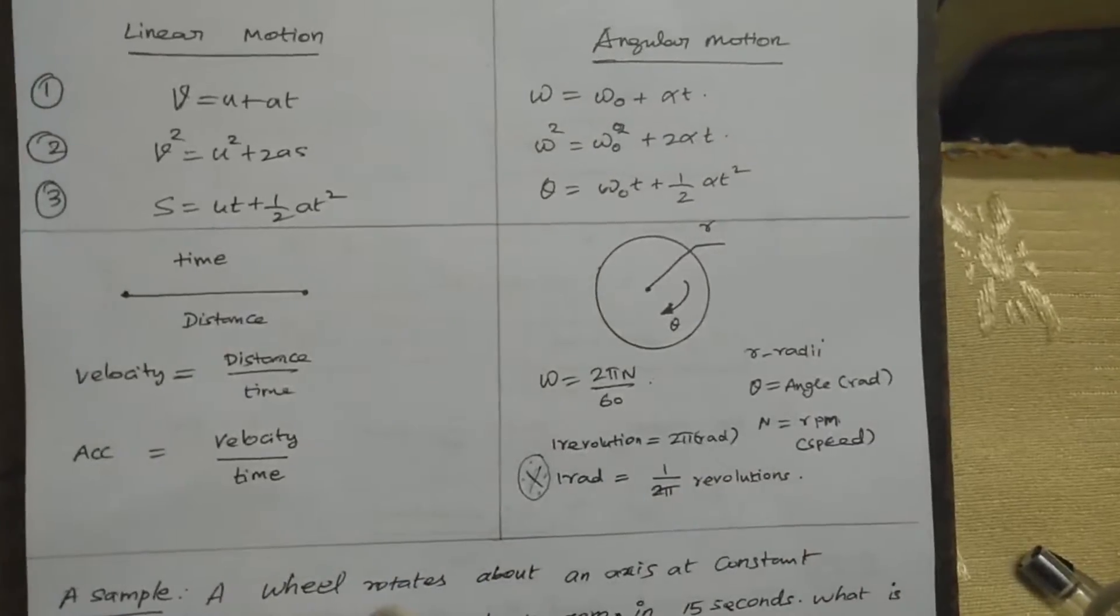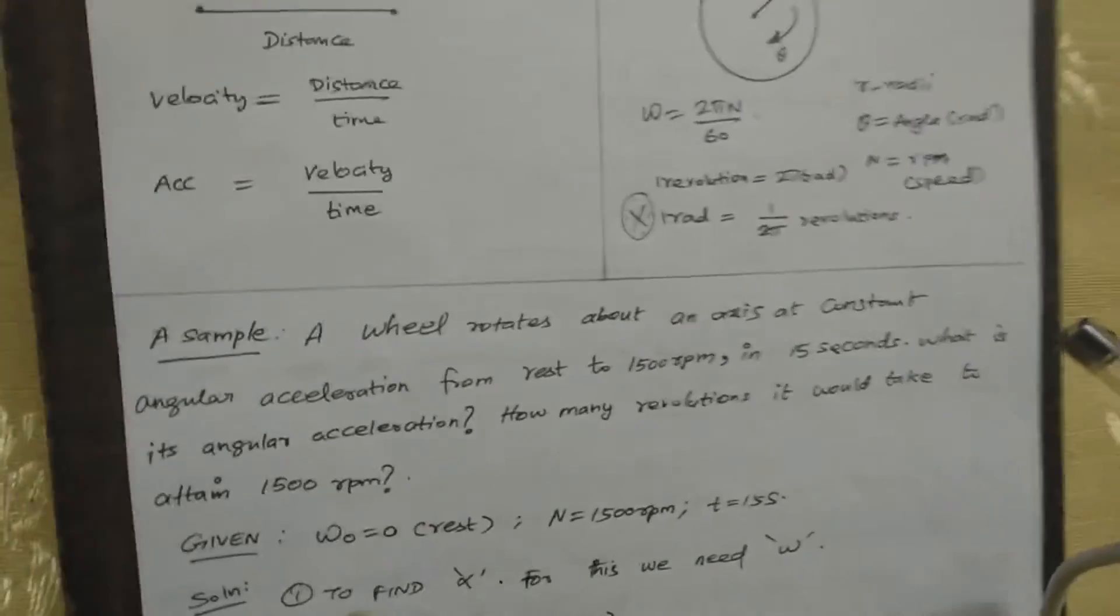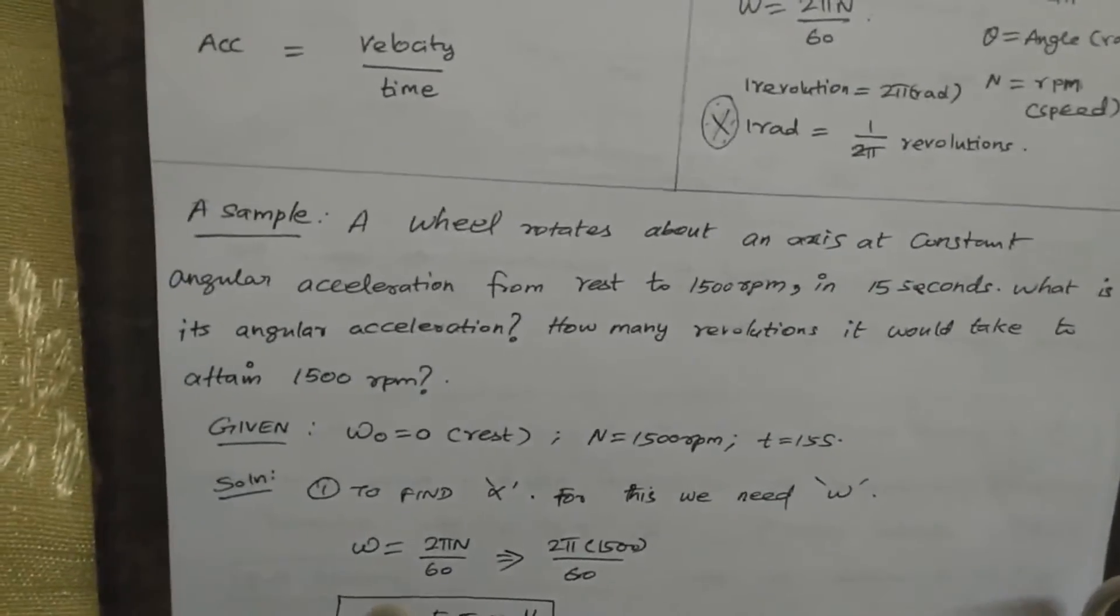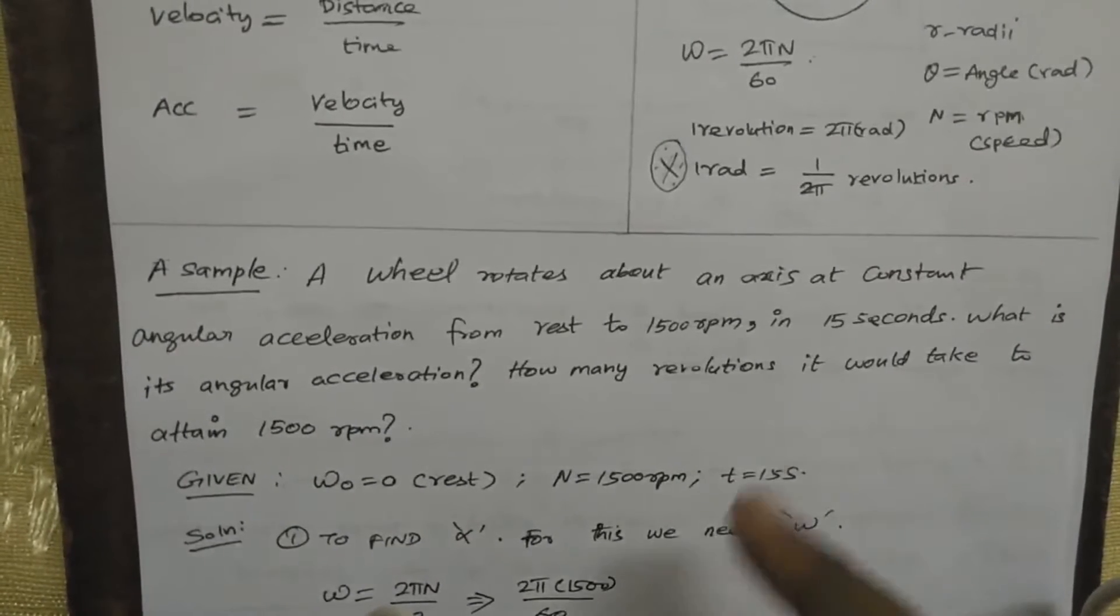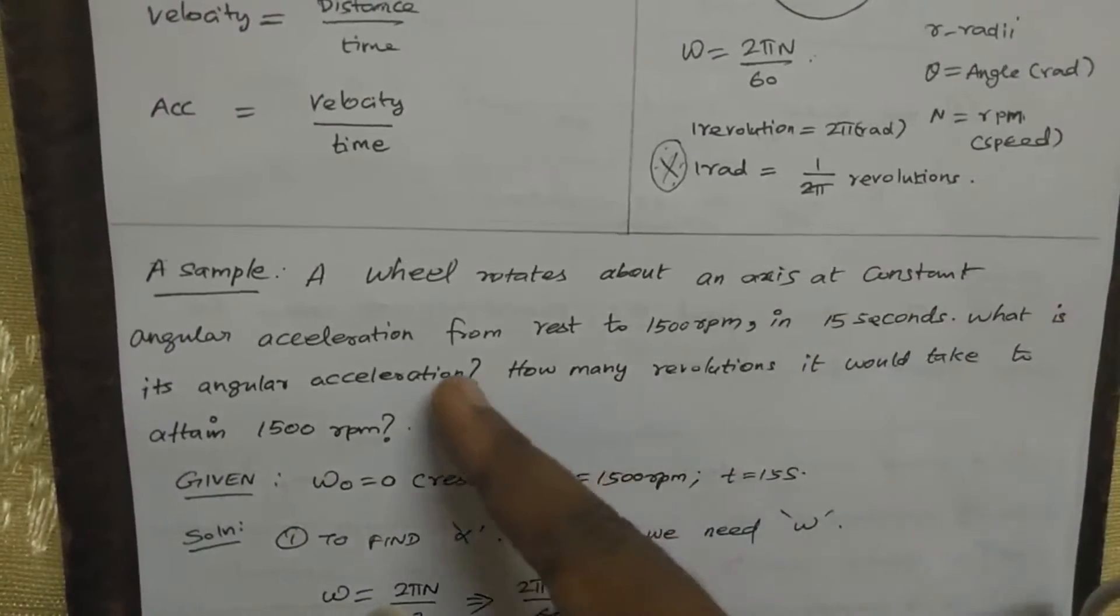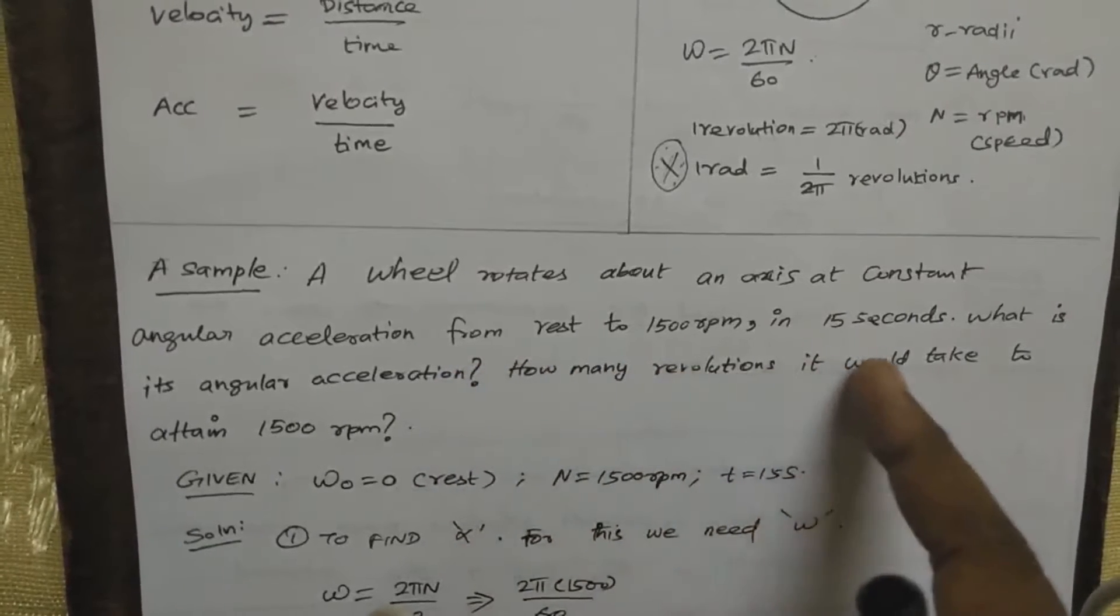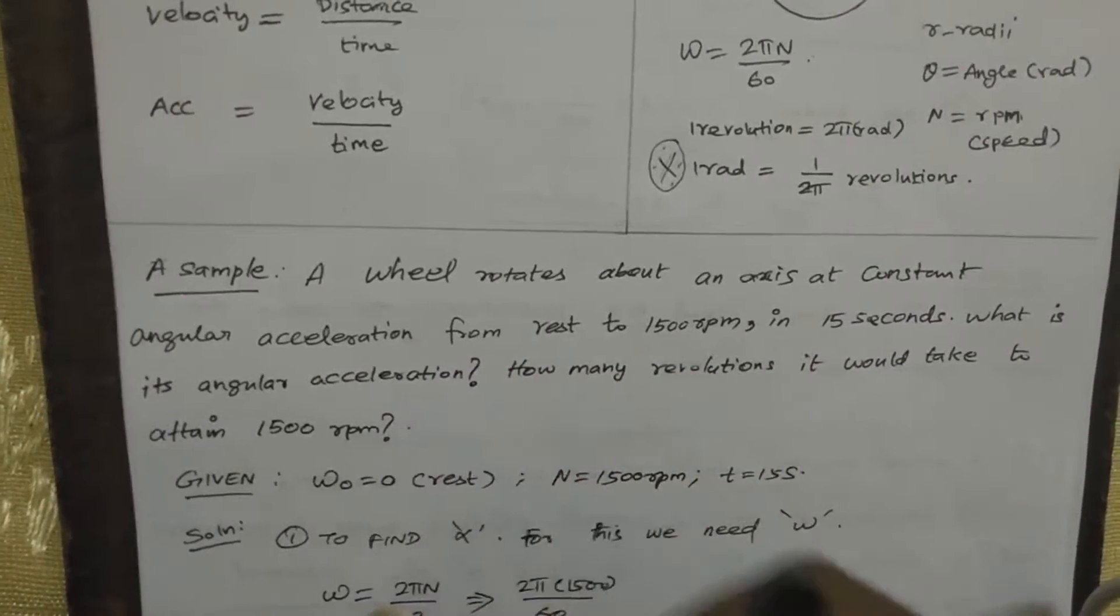We will deal with a sample problem. A wheel rotates about an axis at constant angular acceleration from rest to 1500 RPM in 15 seconds. What is its angular acceleration? How many revolutions would it take to attain 1500 RPM?